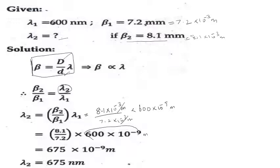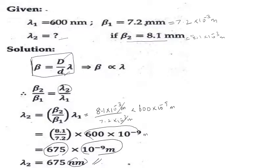Calculating: 8.1 divided by 7.2 multiplied by 609 gives the value 675 nanometers. So the wavelength of the second light source is 675 nanometers.